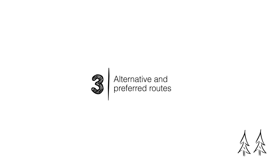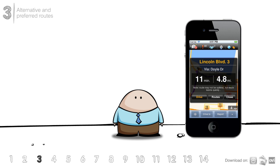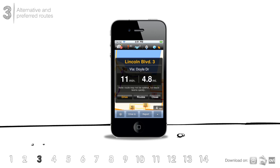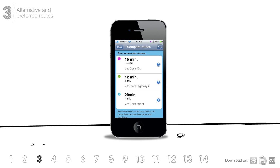Alternative and Preferred Routes. You may have already seen alternative routes as an option, but let's focus in on it for a second. Once you select a destination, Waze will pick the optimal route at that moment and show you the ETA and distance. But if you'd like to see alternatives to the main route selected, you can also decide to view alternative routes.